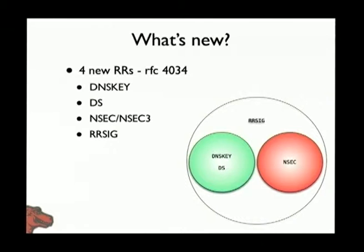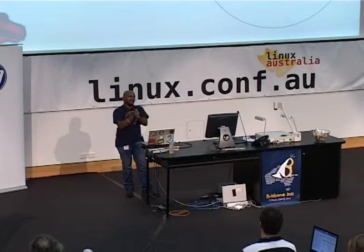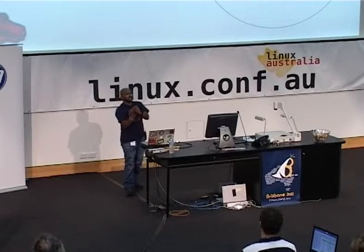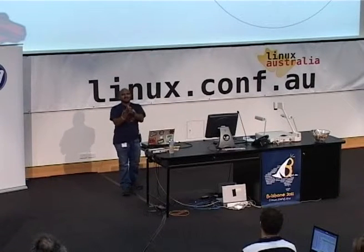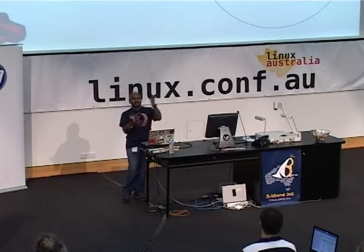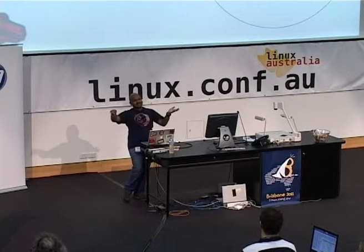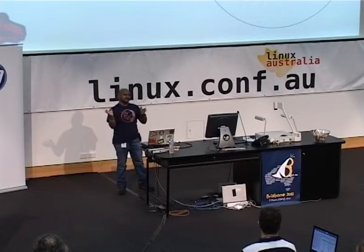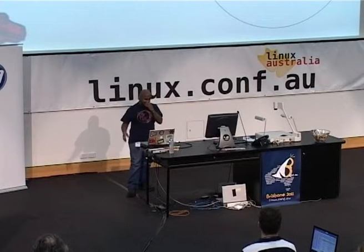A DS record is nothing but a pointer to a DNSKEY record. It holds something called a key tag, which is a unique identifier for a DNSKEY. It holds the hash of the DNSKEY. And the difference is it sits in the parent zone. So a DS record for Mozilla.org would sit in .org and point to a DNSKEY in Mozilla.org. In this process it helps form what is called the chain of trust.